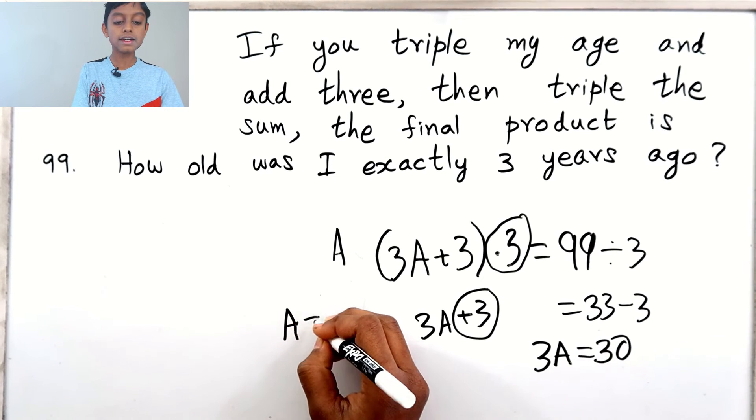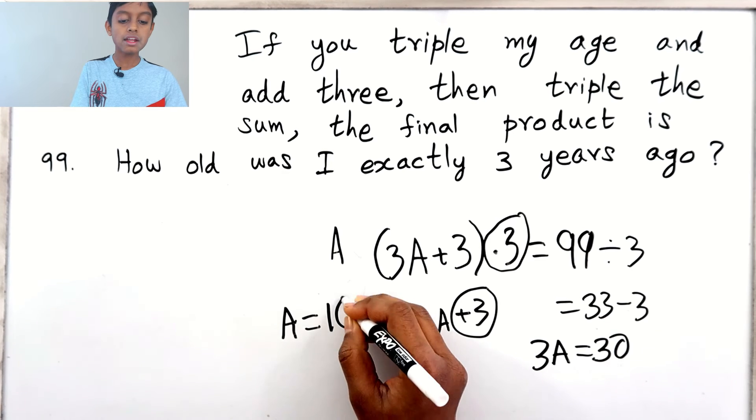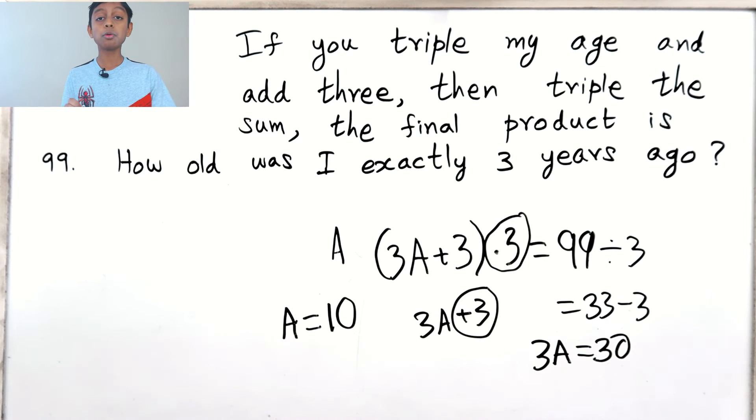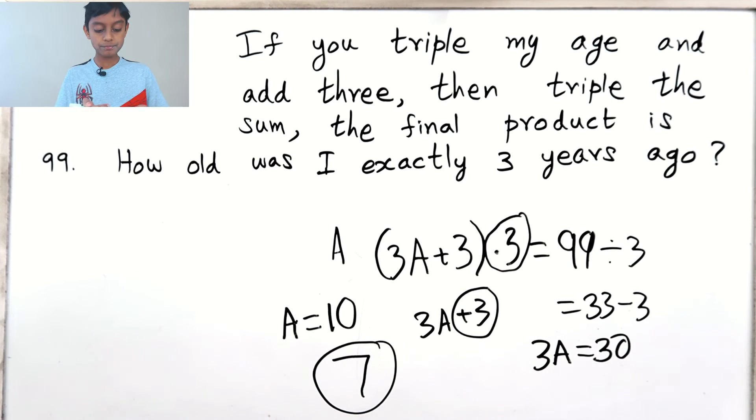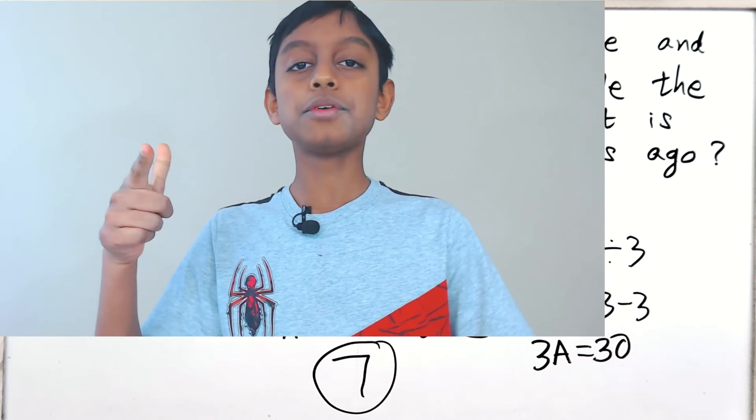So if you simplify this expression, you get A equals 10. We found this age. Now to find the age three years ago, 10 minus 3 is 7. He was seven years old three years ago. Let's do math every day!